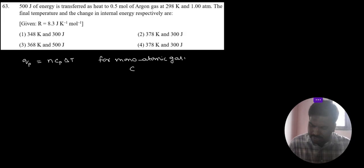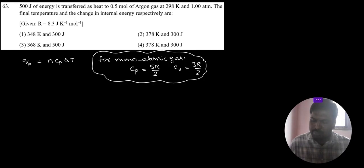Here Cp value 5R by 2 and Cv value 3R by 2. So Cp value 5R by 2 and Cv value 3R by 2.